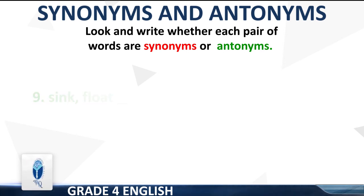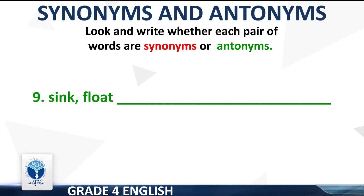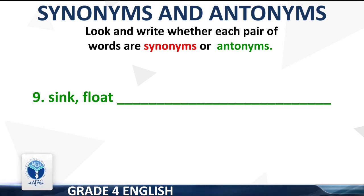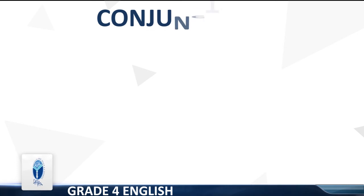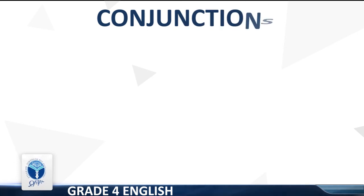Point 9: sink / float. These are antonyms. Point 10: went / come. These are antonyms. Now move to the next sheet. The topic of this sheet is Conjunctions.